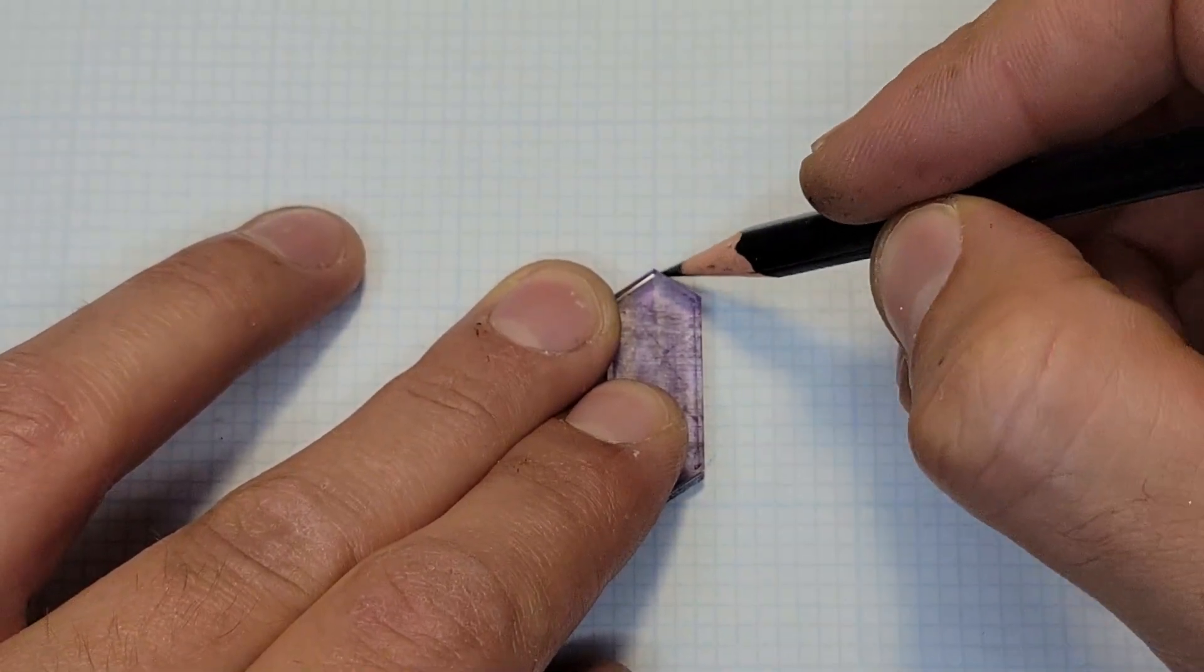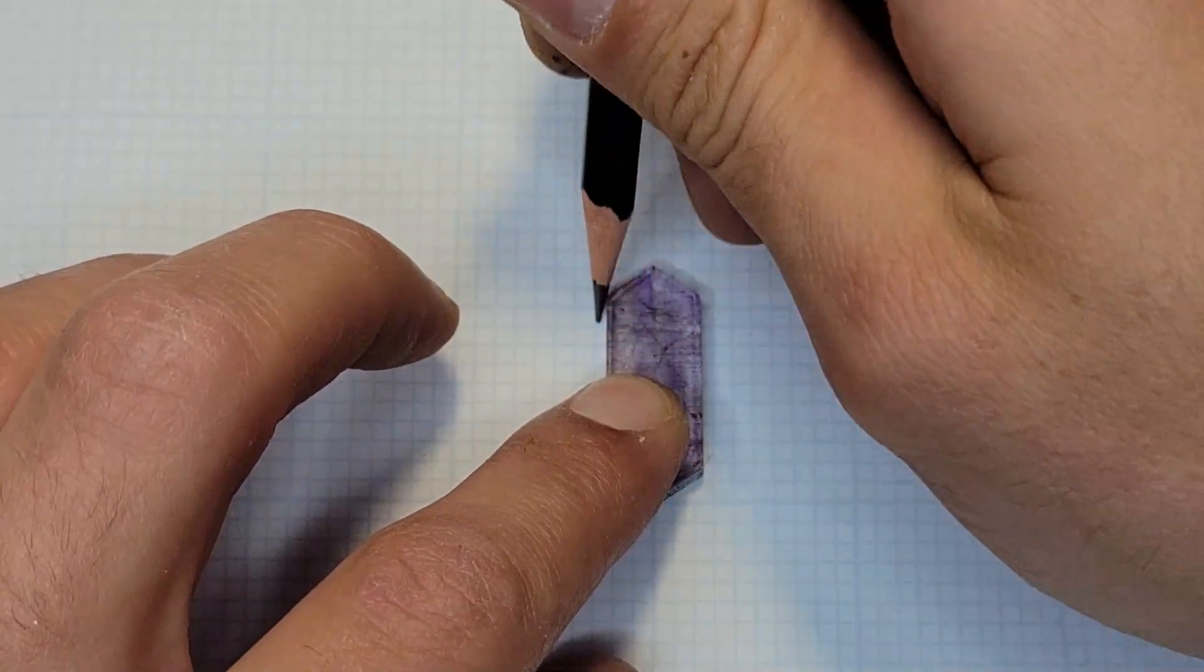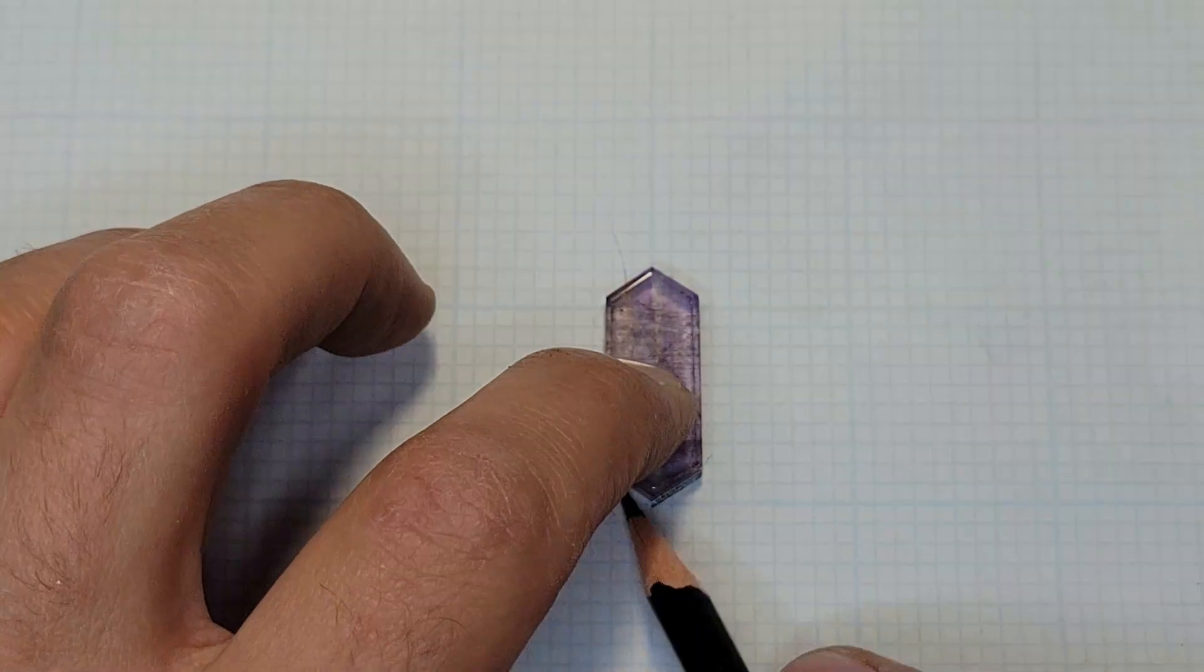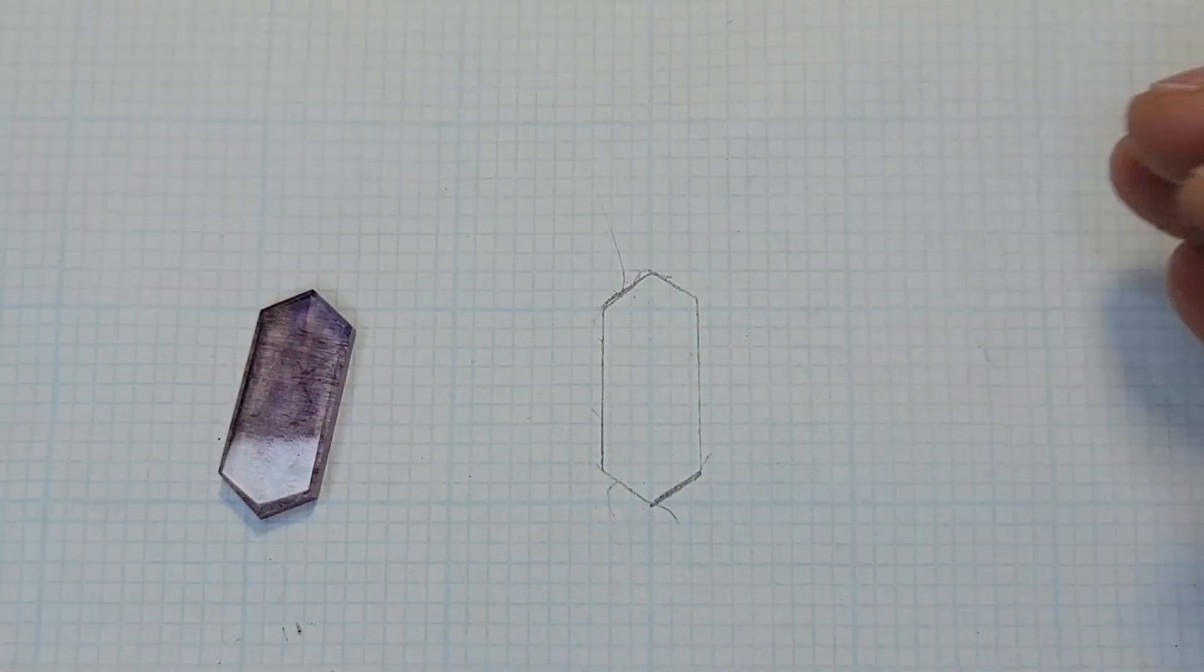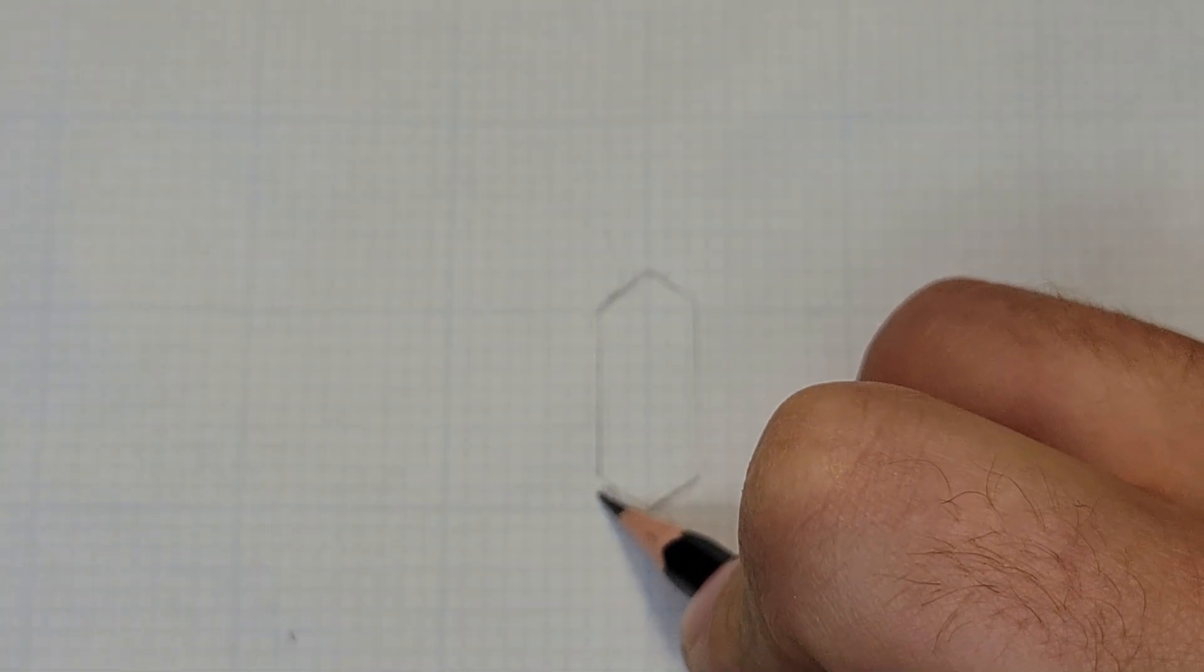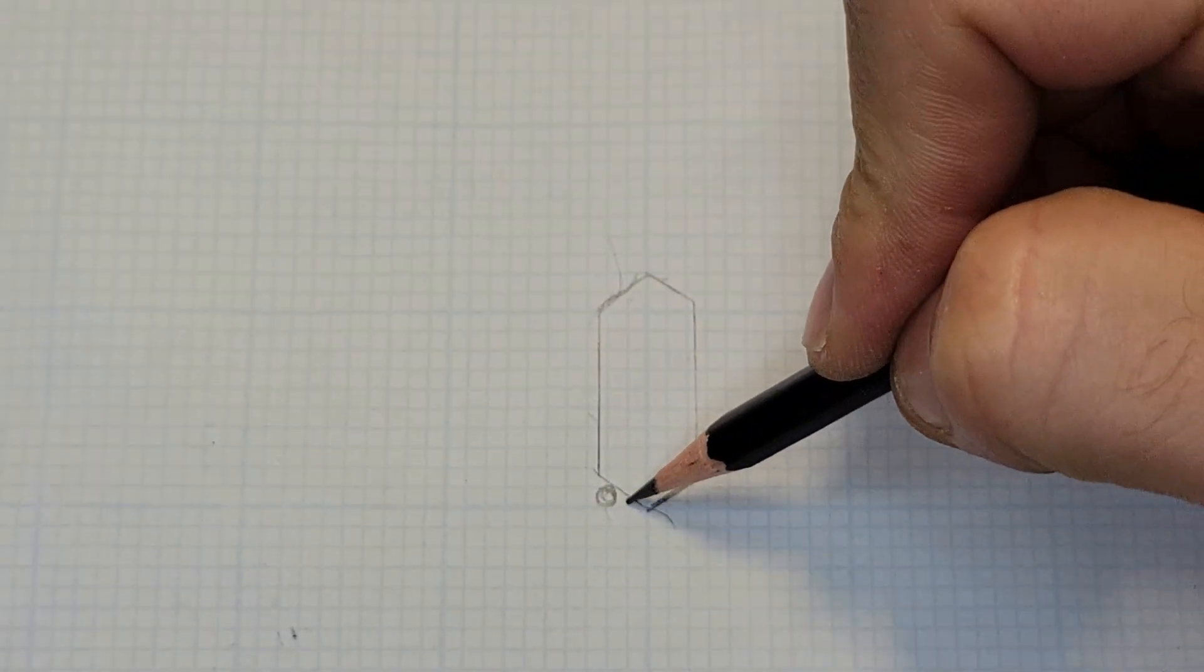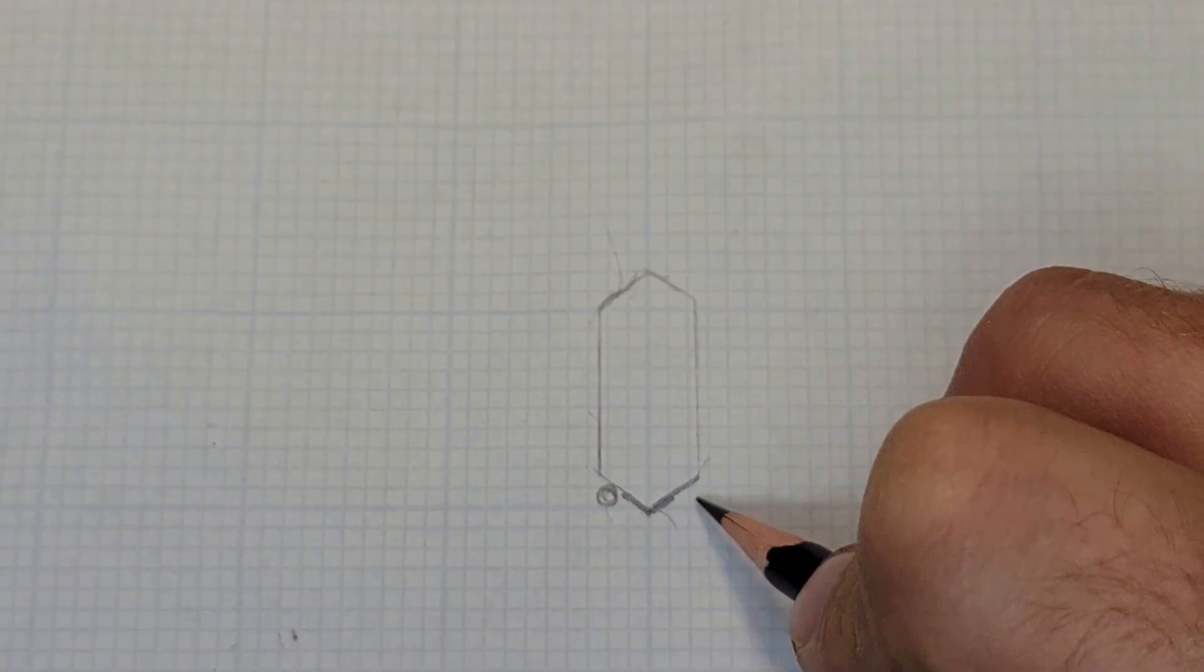So, this is a Super 7 Cabochon. You might remember this from the Complex Pendant series. I ended up scrapping that piece just because it wasn't exactly up to my standards of what I would like to be releasing. And so, I decided to redo that piece in a much more simple design to kind of display the Super 7 Cabochon a bit better.